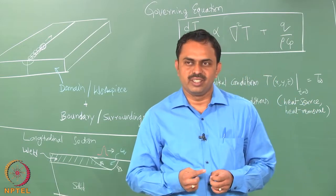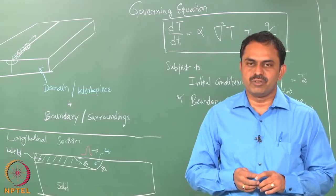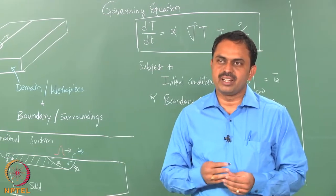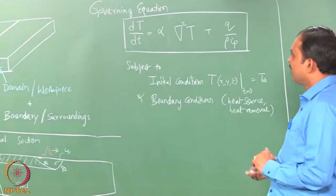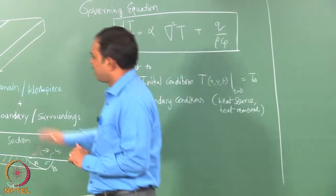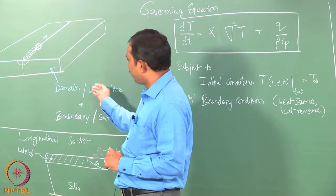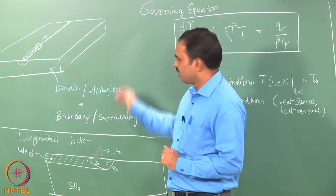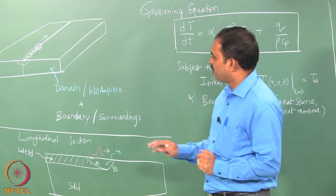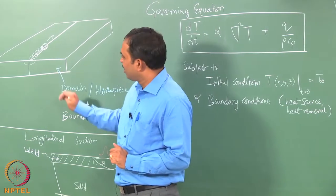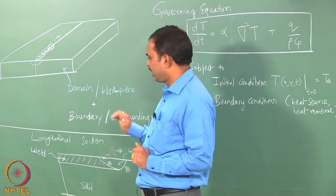Welcome to Part 2 of the lesson on thermal modeling, part of the Analysis and Modeling of Welding online course from NPTEL. We have a small recap of what we discussed in Part 1. The workpiece itself is the domain and the surroundings come under the boundary, which means thermal modeling is done for the domain — the workpiece — and anything happening around it is applied as boundary conditions.